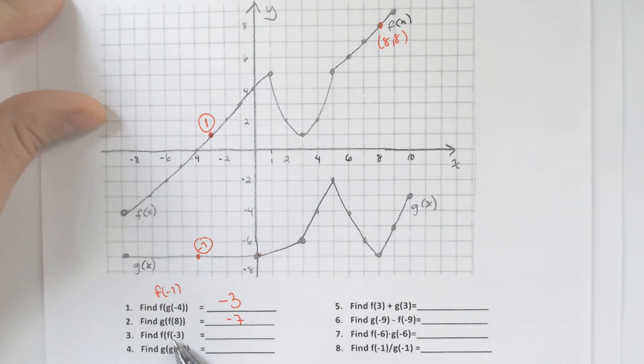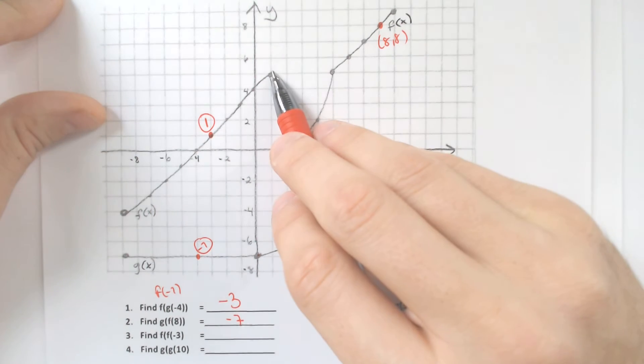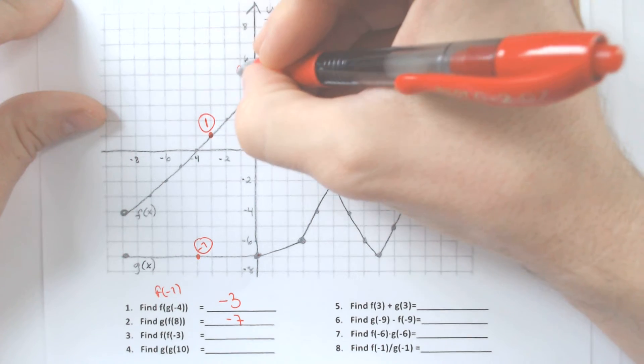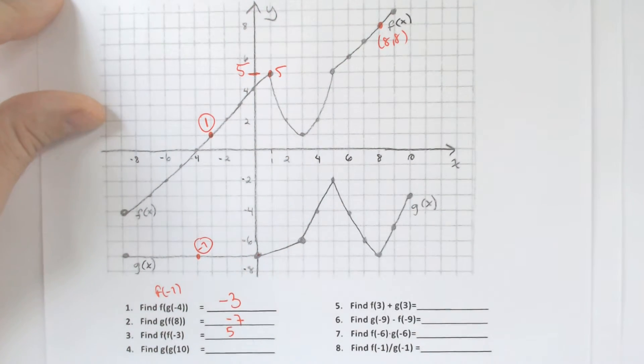So instead of doing f of negative 3, now we have to do f of 1. So you go to the 1 for x value, and you go up, and you would end up at 5. So final answer, 5.